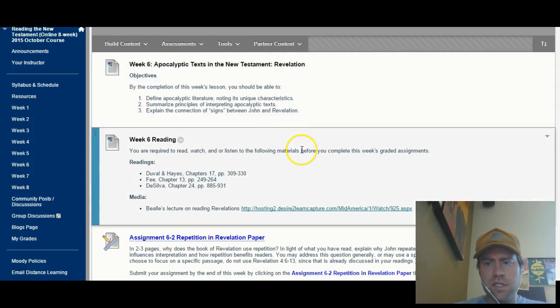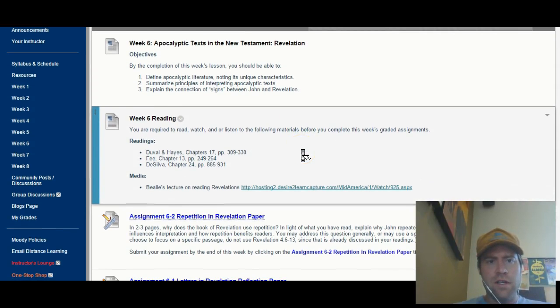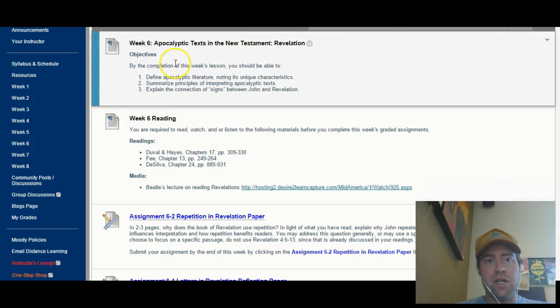I don't think I'm going to spend too much time on any one thing, but as you can well see, this week, week six, apocalyptic texts in the New Testament, book of Revelation. So this week you're really going to want to focus on defining what apocalyptic literature is, noting its uniqueness and characteristics, summarizing principles of interpreting these kind of texts, and then finally explaining the connection of signs between John and Revelation.